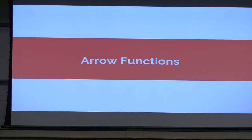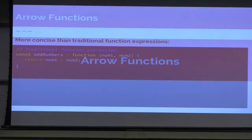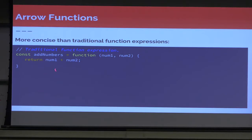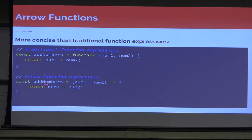The next thing we're going to talk about is arrow functions. If you've ever worked with CoffeeScript or TypeScript, this might look similar — they based a lot of ES6 functionalities on other languages that were trying to take JavaScript further. Here we have a traditional function expression, addNumbers, that takes in num1 and num2 and just adds and returns them. What arrow functions give us is a more concise function expression: we remove the function keyword and just do an arrow, start the block, close the block. Looks very similar.